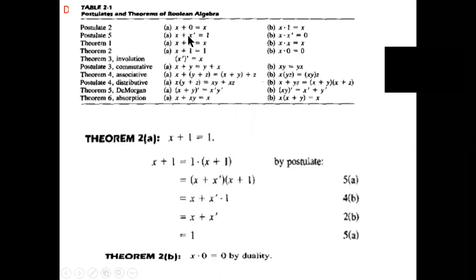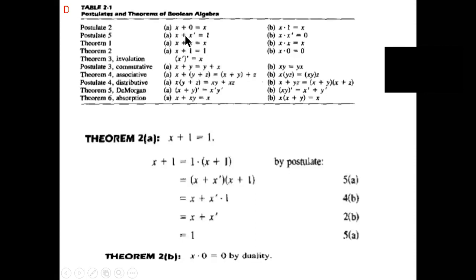Using φa: x plus x' equals 1. What is the value of 1? I am putting x plus x' for 1. Then for x plus 1, I am retaining it as it is. Then using postulate 4b for simplifying.